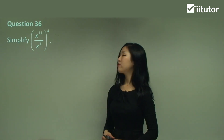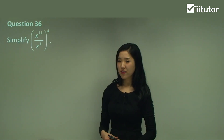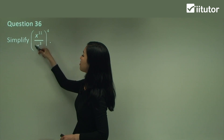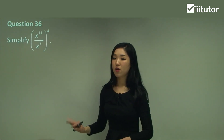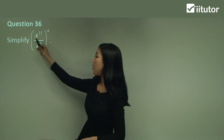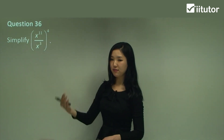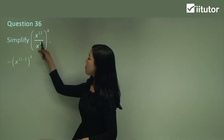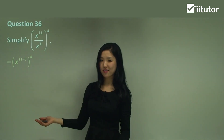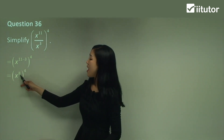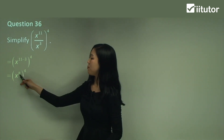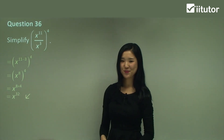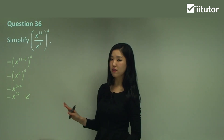Question 36. We've got a fraction inside brackets. What I like to do is simplify whatever's inside the bracket first. We have the same base x, and since it's a fraction it means division, so we subtract the indices: 11 minus 3 gives x to the power of 8. Now we've got rid of the fraction. Then with the outside power, we multiply: x to the power of 8 times 4, which is x to the power of 32.